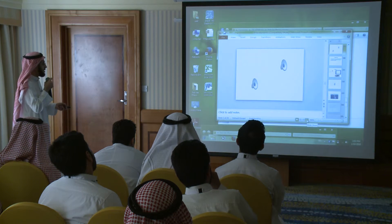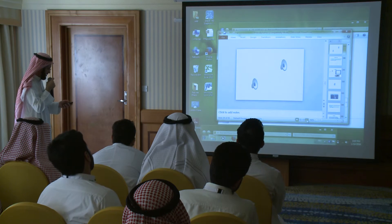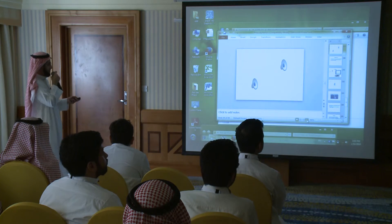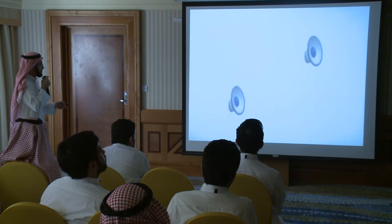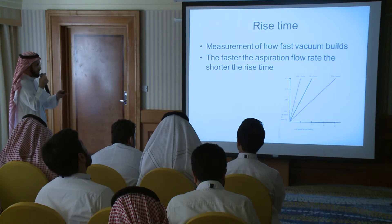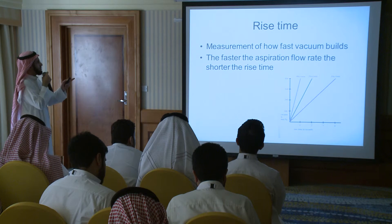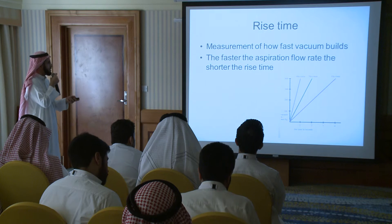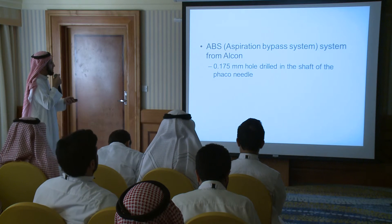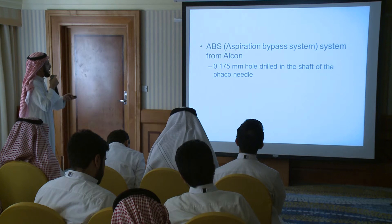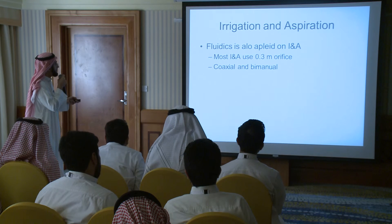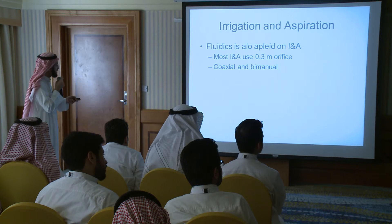We have two types of vacuum pumps: peristaltic and Venturi. The rise time — how fast vacuum builds up — is higher with Venturi compared to peristaltic. The surge is the sudden collapse of the anterior chamber; certain mechanisms exist in machines to reduce surge.